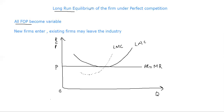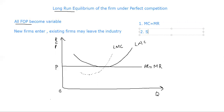There are two conditions that must be fulfilled for equilibrium. First, MC must be equal to MR. Second, at the point of intersection, the slope of MC must be greater than the slope of MR — meaning the increasing part of the marginal cost curve must intersect the marginal revenue curve, and that intersection point is the equilibrium.